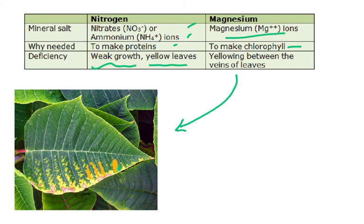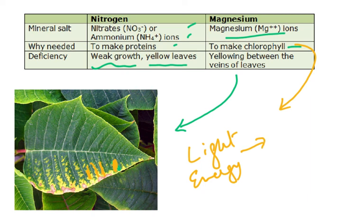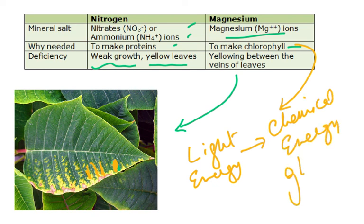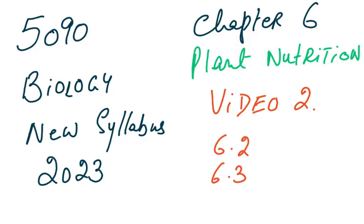We need magnesium for the chlorophyll molecule, which converts light energy into chemical energy stored in glucose. If there are fewer magnesium ions, there is less chlorophyll, less photosynthesis, less glucose made, and less starch reserves. There will also be less glucose available for respiration. This completes Chapter 6, covering sections 6.2 and 6.3. Thank you for watching and subscribing.